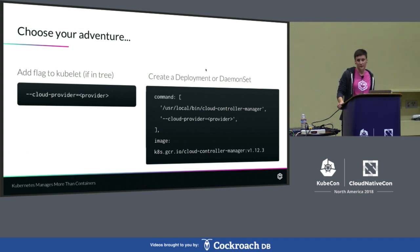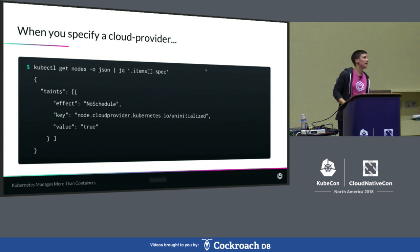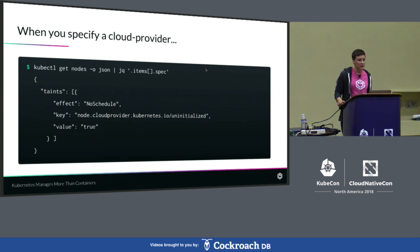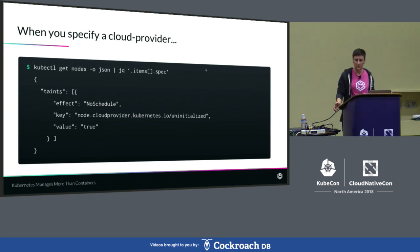Now, if you run out-of-tree, you're still going to have to specify that cloud provider flag on your kubelet and specify it to external. This is because by doing that on your kubelet, it sets all of your nodes to have this taint, which says that that node is not schedulable until the CCM initializes your node, as well as it just lets your CCM know that it needs to do something with this node.